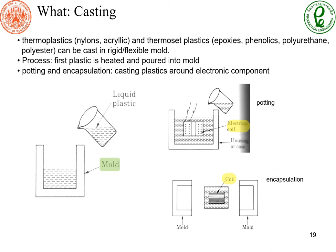Another process is simply to cast plastic. We melt plastic into a liquid state and pour it into a mold, just like metal casting. Electronic components such as electric coils can be placed into plastic casting to create plastic encapsulation around the coil.